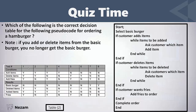The last table is the correct one because it has eight test cases, each with the relevant conditions, and the results are also correct. For example, test case number one: the customer added an item, deleted an item, and added fries — so he will not get the basic burger, but he has added items, deleted items, and fries with his order.